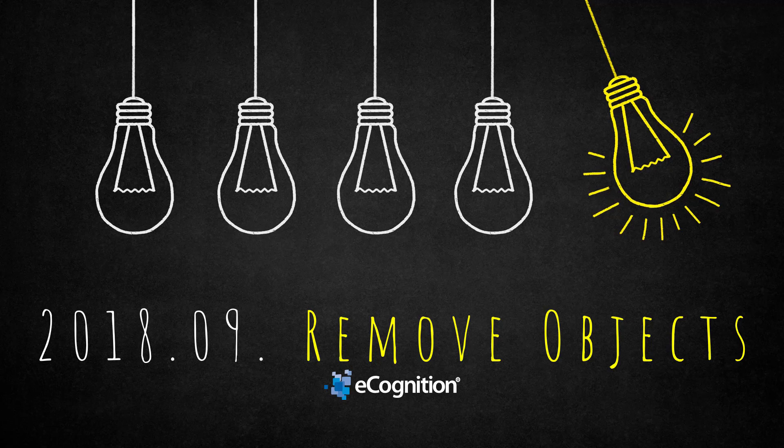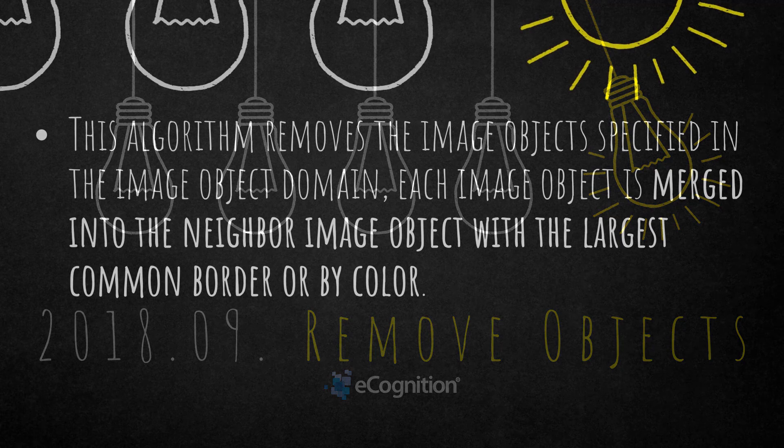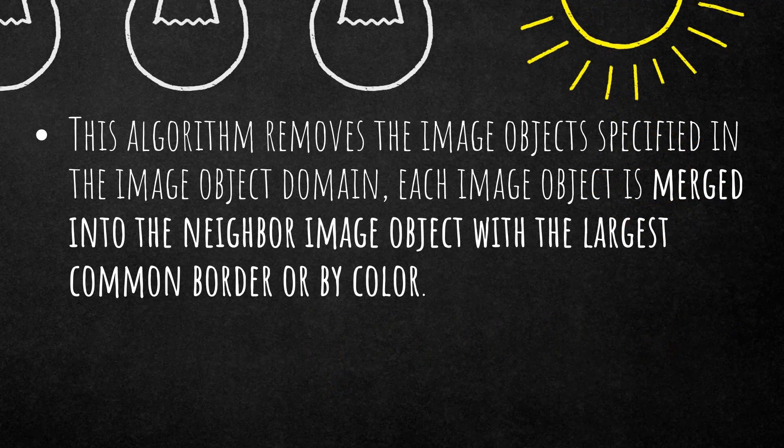First, a little bit of theory and examples, and then two small use cases — and then that's a wrap. This algorithm removes the image objects specified in the image object domain, and each image object is merged into the neighbor image object with the largest common border or by color. So we have two different settings that you can choose from.